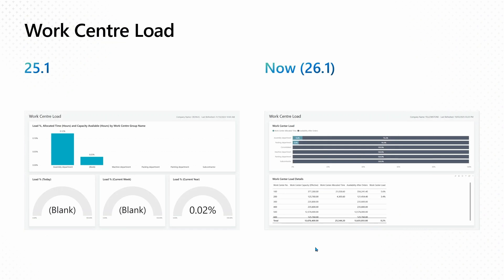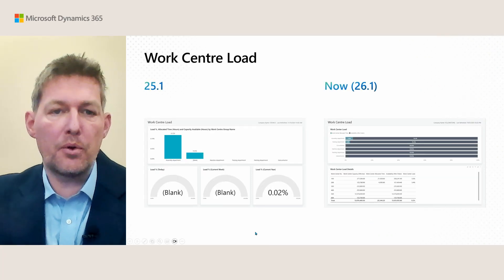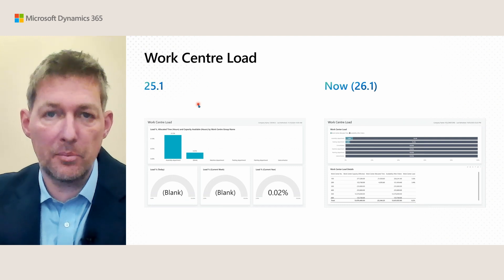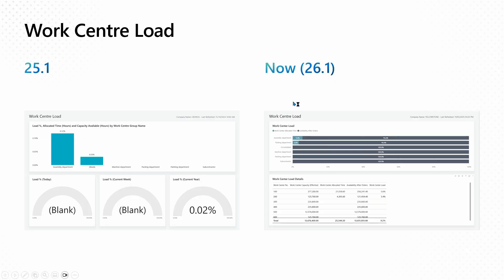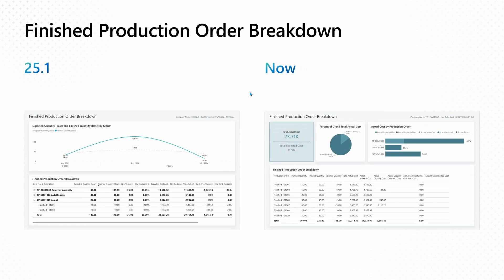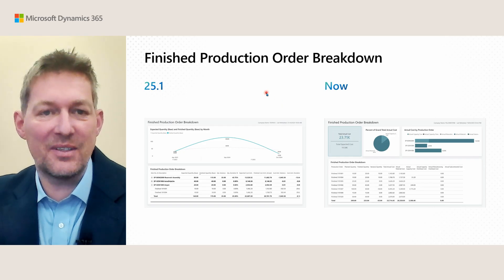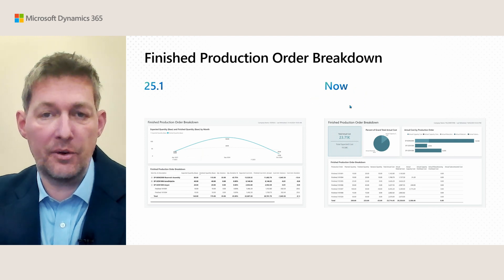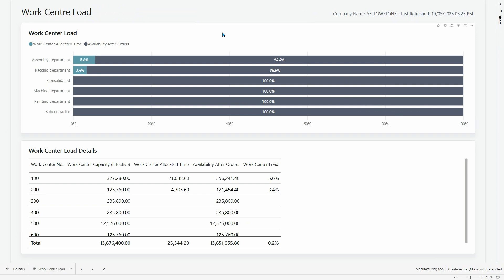Let's first take a look at some of the reports we updated in the manufacturing Power BI app. The first is the work center load report — here you can see the original version from last semester and the updated report. Another example is expected capacity need, where the previous version is on the left and the new version is on the right. The final one I want to show you is finished production order breakdown — again you can see the original version on the left and the current version on the right.